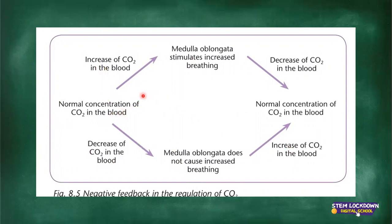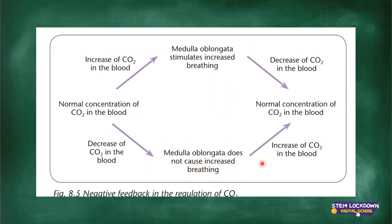In the middle you have the normal concentrations of carbon dioxide. When there's an increase in carbon dioxide in the blood, the medulla oblongata stimulates increased breathing. Your heart will beat faster, you take in more oxygen, release more carbon dioxide, and there's a decrease back to normal. But if there is a decrease in carbon dioxide in the blood, the medulla oblongata does not cause increased breathing — it only responds to an increase of carbon dioxide. So when there's a decrease, it does nothing, and the carbon dioxide will increase on its own back to normal.